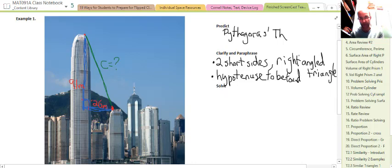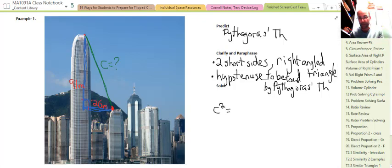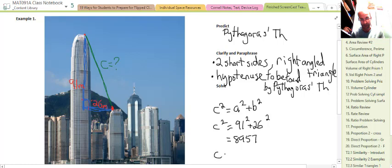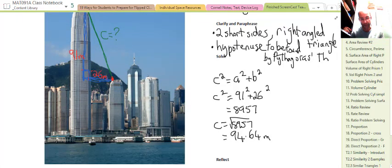Let's go and solve it. c² equals a² plus b². Substitute the values in: 91 and 26. We add those together, we get 8957. To find c, the length of the cable, we have to take the square root of 8957. Using a calculator, that comes to about 94.64 meters, rounded to two decimal places. So about 95 meters of cable.